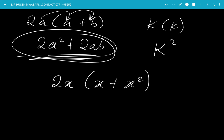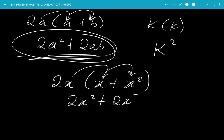Say you have 2x times open bracket x plus x squared. Remember that x and x squared are not the same. When expanding, you add the powers on the x terms. So 2x times x gives you 2x squared, and 2x times x squared gives you plus 2x cubed. Since x squared and x cubed are not the same, that is the final answer.